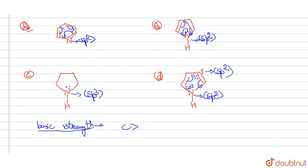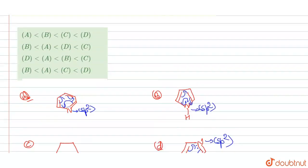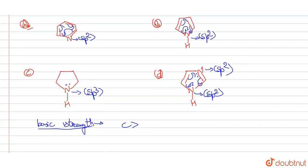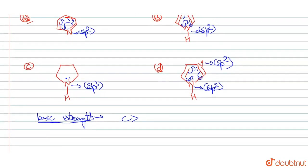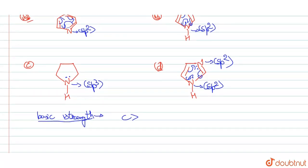C is the most basic. Now comparing B and D: in compound D there is one nitrogen atom with a localized lone pair, so D is more basic than B. Therefore the order so far is C greater than D greater than B, with A to be placed.